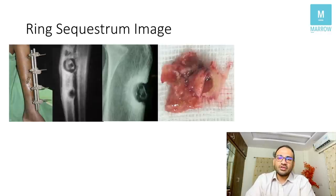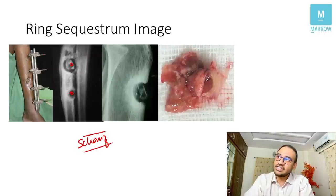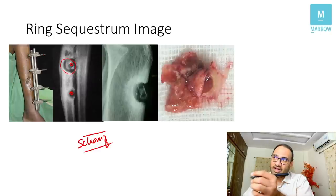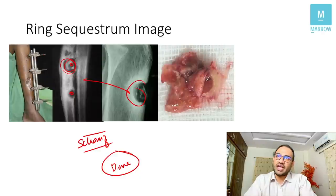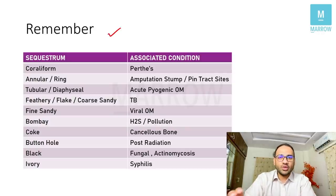Coming to the next question: ring sequestrum is seen in pin tract infection. We apply external fixators for open or compound fractures using Schanz pins that make a hole into the bone. If it gets infected, there will be death of the bone — sequestrum — and that dead sequestrum will be in the shape of a ring around the pin. Ring sequestrum occurs at the pin tract sites of external fixators, visible on x-ray as dense bone. Surgical removal is sequesterectomy.